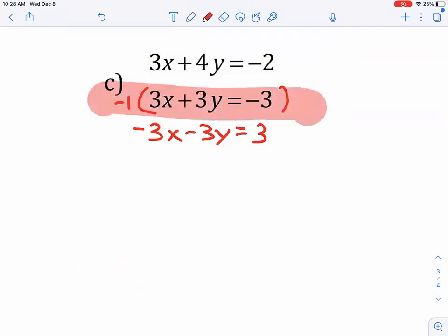Now, once we do that, I'm focusing on the top and bottom equations. I'm going to add them down. So, my 3X minus 3X cancel. I have 4Y minus 3Y is 1Y, and negative 2 plus 3 is 1. Look at that. We already have half our answer. Y is equal to 1.